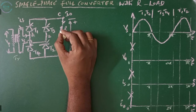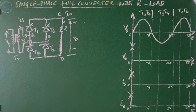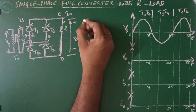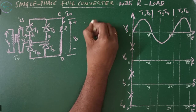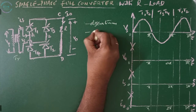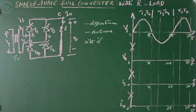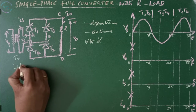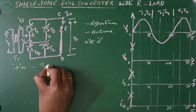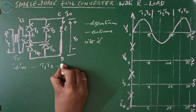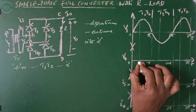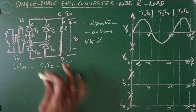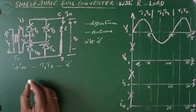With a resistive load R, we have two types of operations: discontinuous and continuous. Continuous operation can be achieved by firing the thyristors with an angle alpha. First we discuss discontinuous operation. In the positive half cycle, thyristors T1 and T2 are fired with a firing angle alpha, since both are in forward biased condition. Let this angle be alpha — then these two thyristors start conducting.